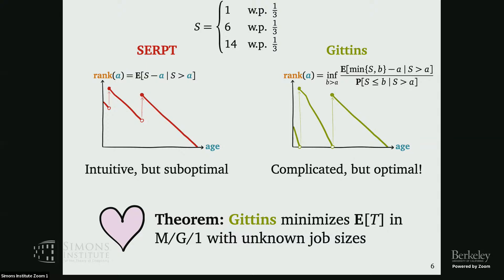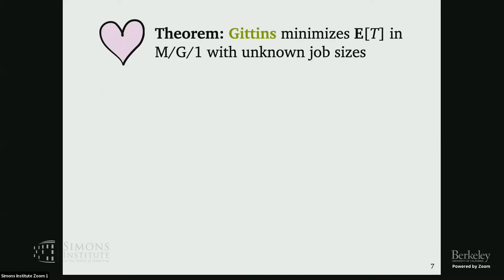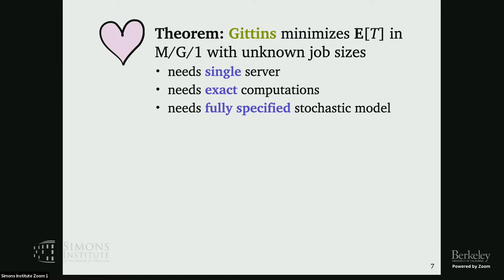This optimality holds when I have a single server, when I'm exactly computing this to exact precision, and when I exactly know the job size distribution S. So the optimality result needs a single server, needs exact computations, and needs a fully specified stochastic model.